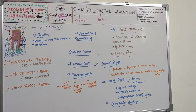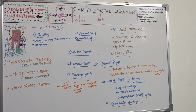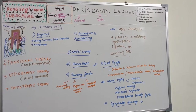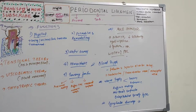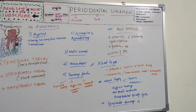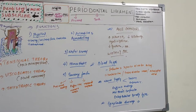This concludes the four-session coverage of periodontal ligament: session one covered basic structure and formation, session two covered cells and extracellular material, session three covered principal fibers, and session four covered functions, age changes, blood supply, and lymphatic drainage. Having completed gingiva and periodontal ligament — the soft tissues of periodontium — the next session will move on to cementum and alveolar bone, the hard tissue components.